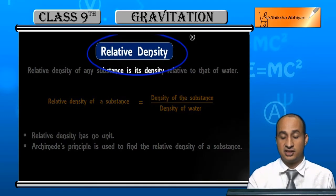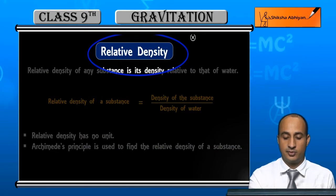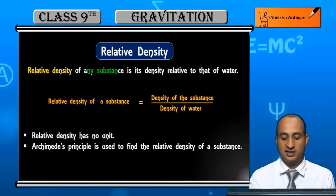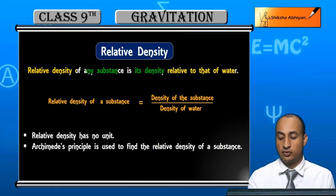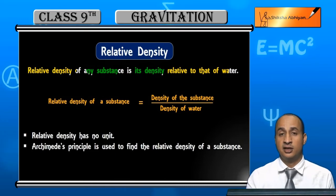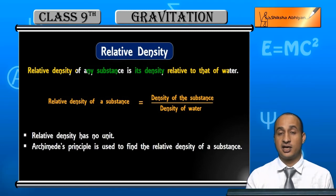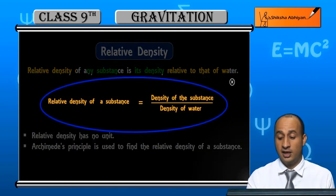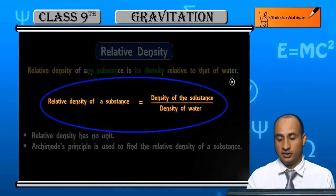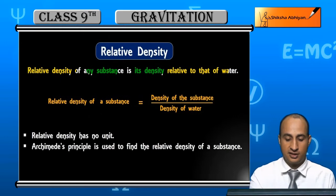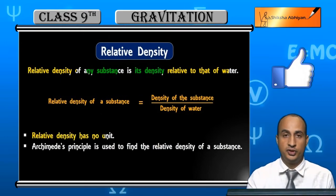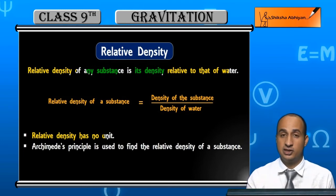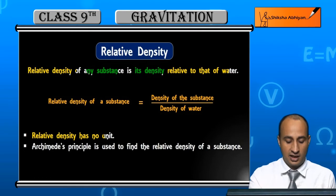Now, relative density of any substance. Relative density of a substance is its density divided by the density of water. Relative density of a substance has no unit, kyunki oopar density of substance aur niche denominator me density of water hoti hai — dono ki same unit hogi, so unit cancel out ho jayegi.